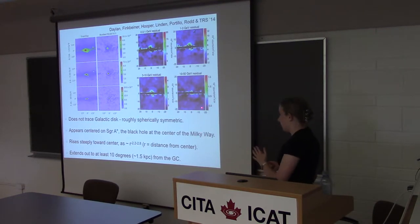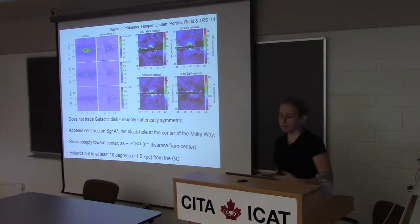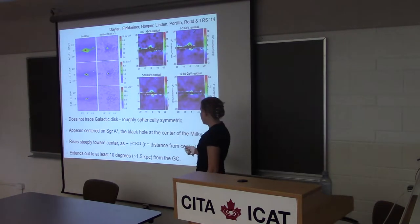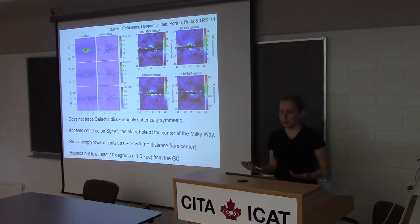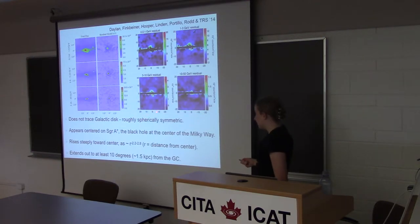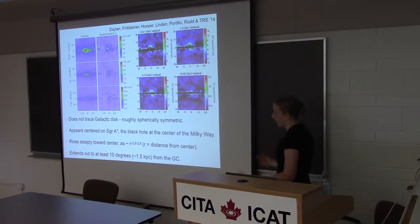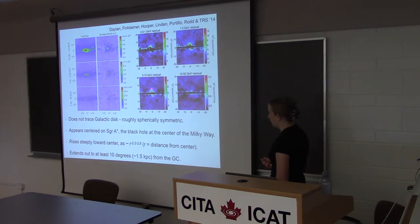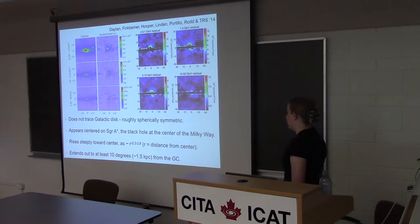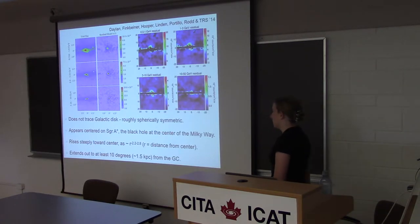When you analyze this excess, you can ask what provides a better fit. What we're doing is typically a template fit — modeling the background as a linear combination of various templates, then putting in a template for the signal and asking what is the significance with which it is preferred. We can try signal models that trace the galactic disk, purely spherically symmetric models, or models elongated in some arbitrary direction. Generally we find there may be a slight preference for a stretch, but this axis doesn't appear to be aligned with the galactic disk at all. Within the uncertainties, it actually looks spherically symmetric.